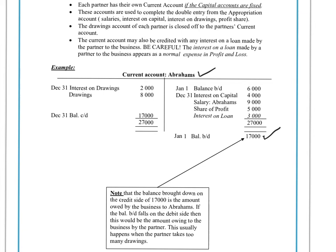If Abrahams was to leave today, the company would give him back the original amount of capital that he invested plus $17,000 that he has made during his time at the company as one of the partners. All the good things he earns get added on the credit side, because that's the amount that's going to be owed to him at the end. All the things he has to pay end up on the debit side. The balance carried down is normally on the debit side and brought down on the credit. If the partner has drawn a lot of money out, you may have the balance on the opposite side.